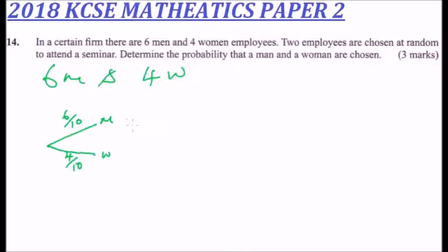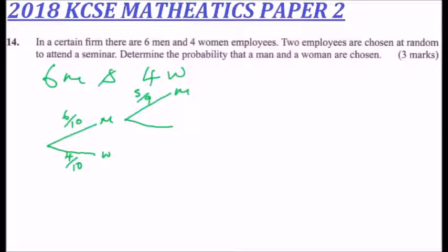If a man is chosen first, there are nine people remaining with five men left, so the probability that a man is chosen second is five over nine. The women are still four out of the nine remaining members, so the probability of a woman is four over nine.